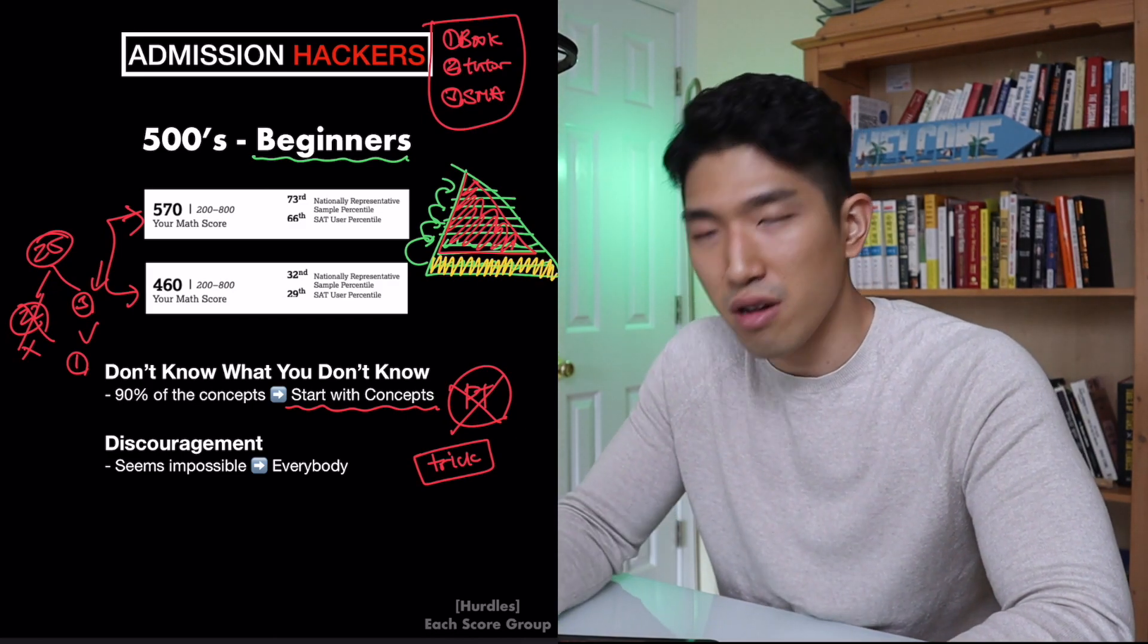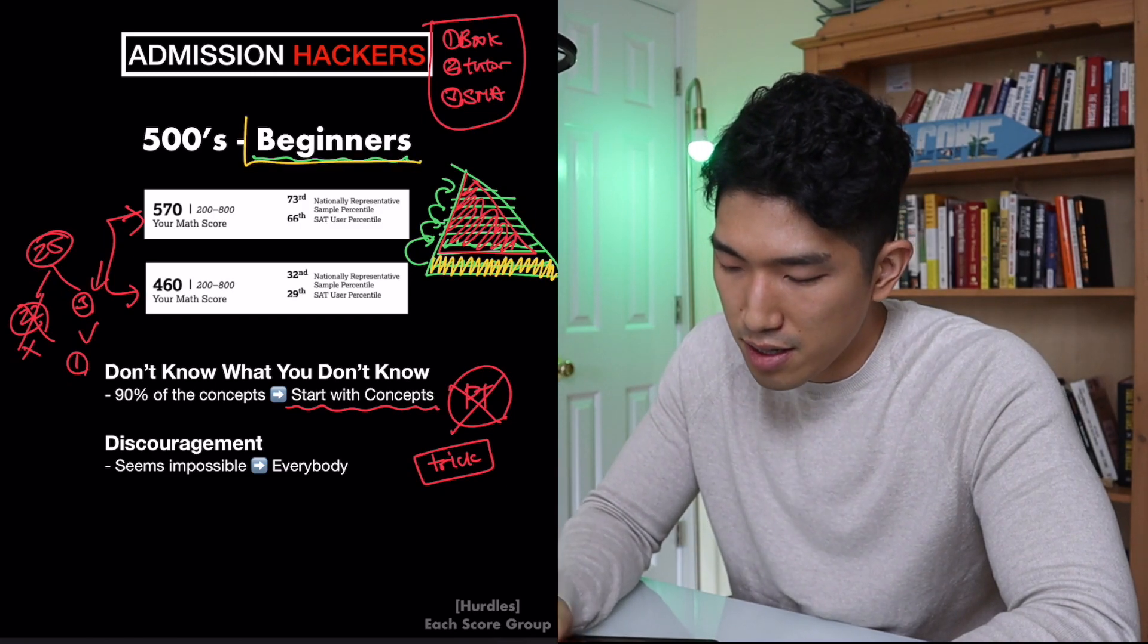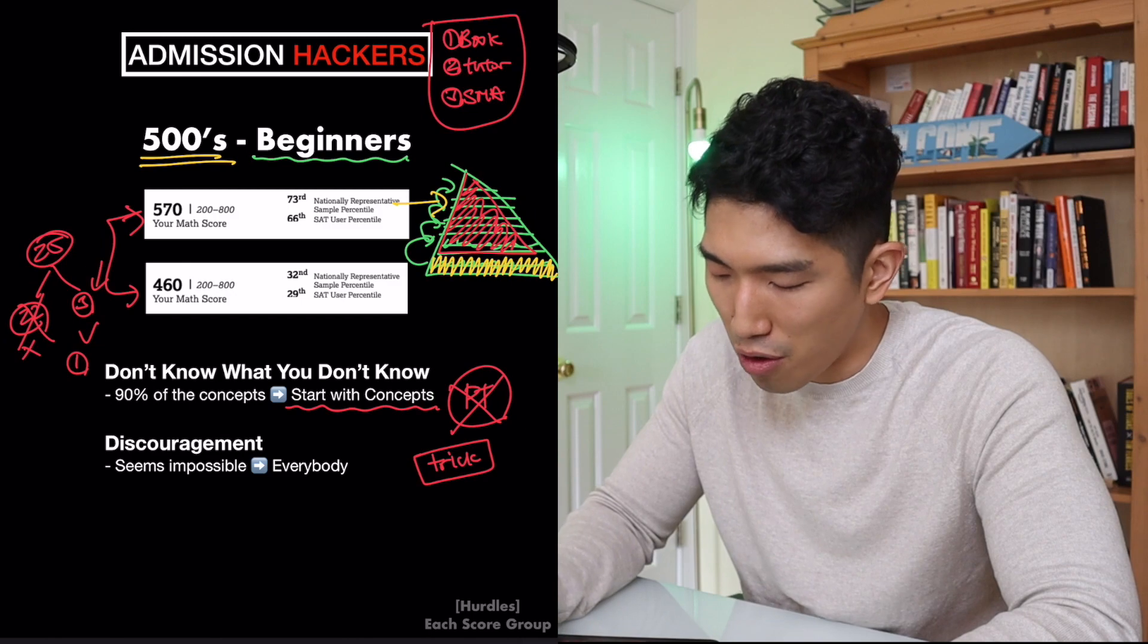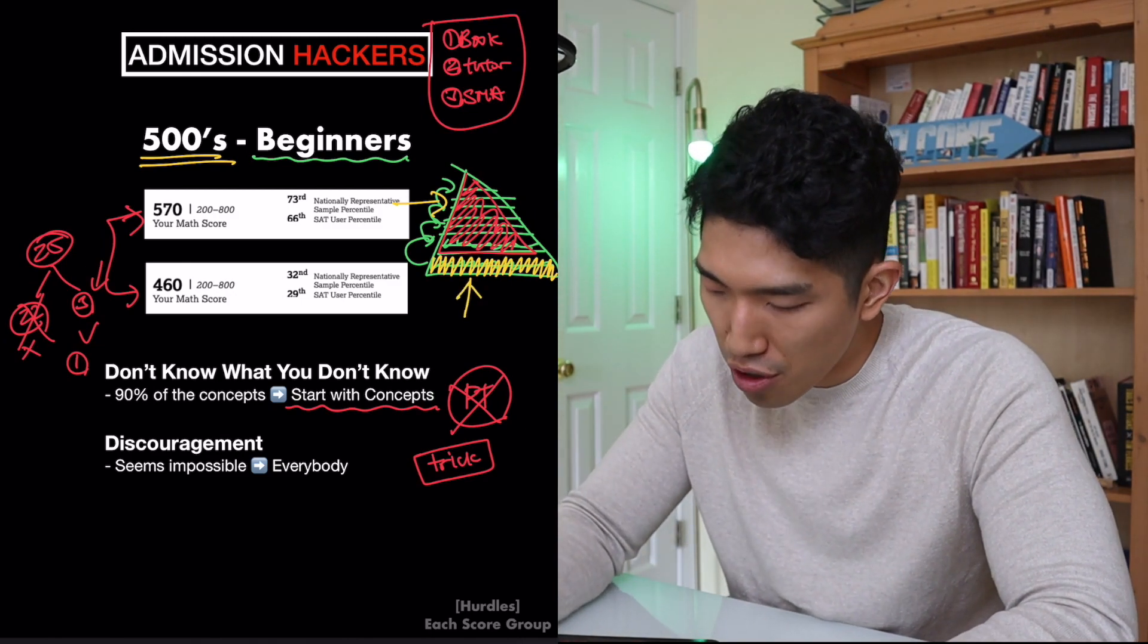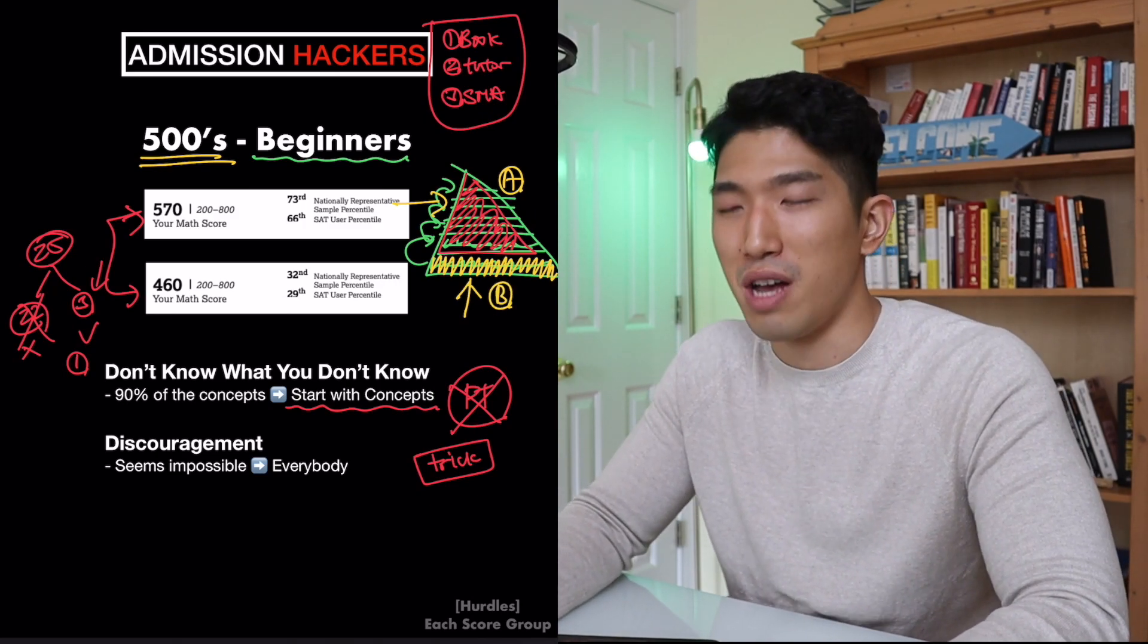They're just going to assume that you know the basics of the math. And that works for a good chunk of the populations, but for the beginners, it's going to be a problem because if you're in the 500 range, that means you don't know the advanced stuff, but you also are shaky on the very basic stuff as well.